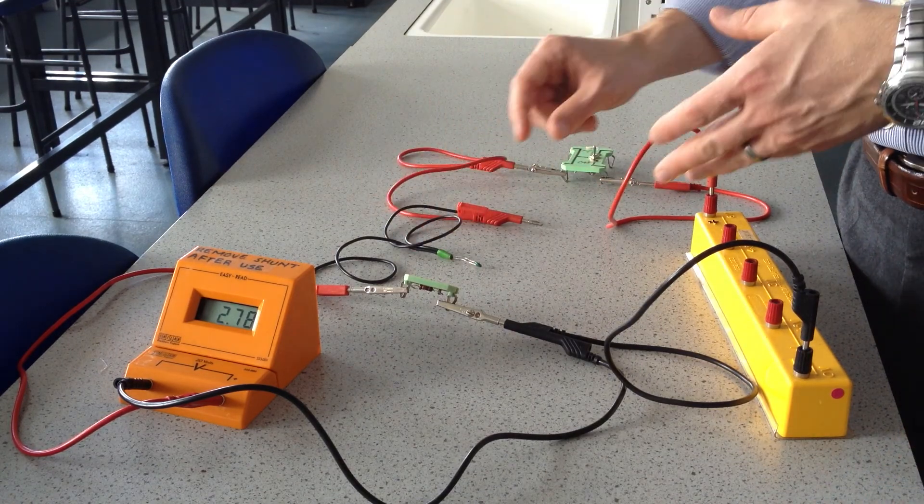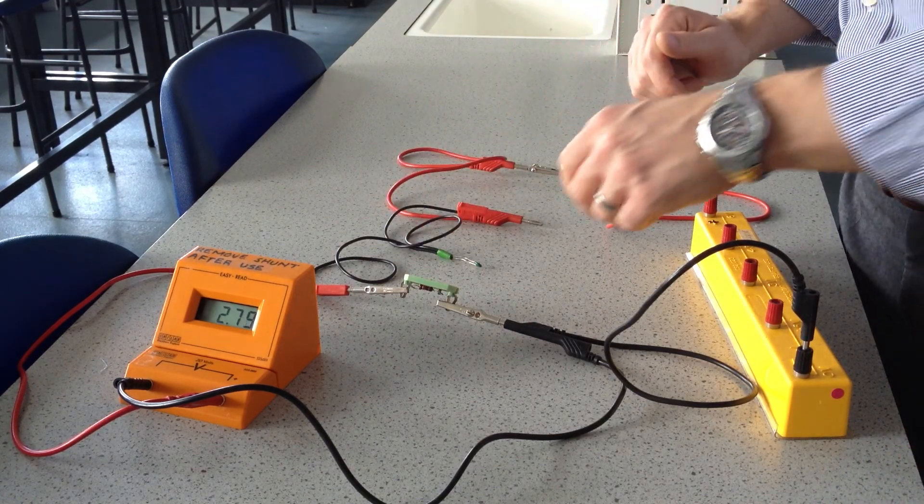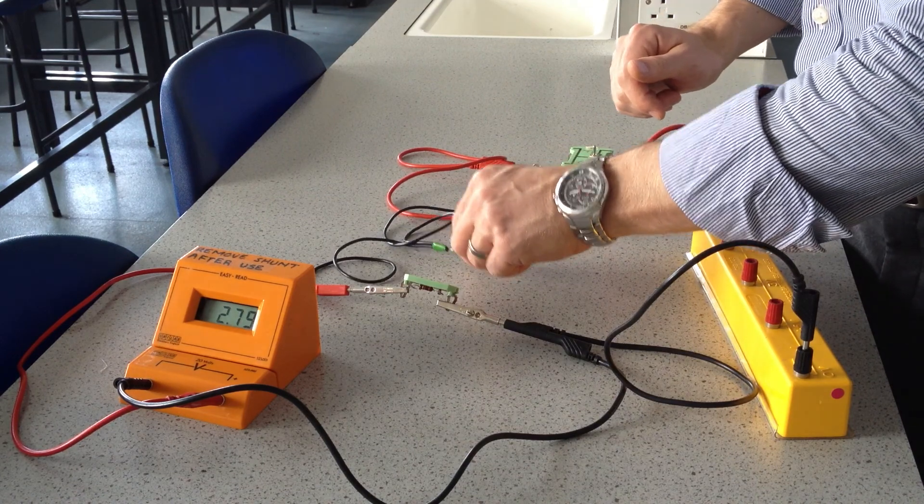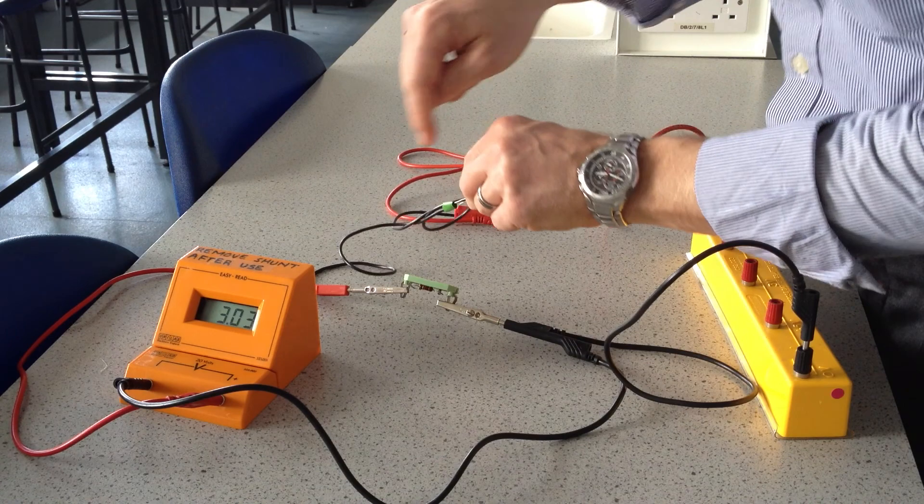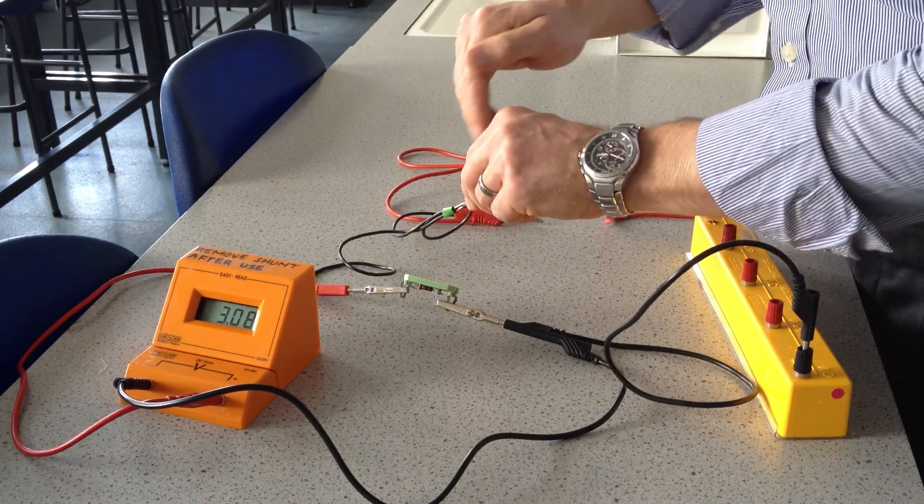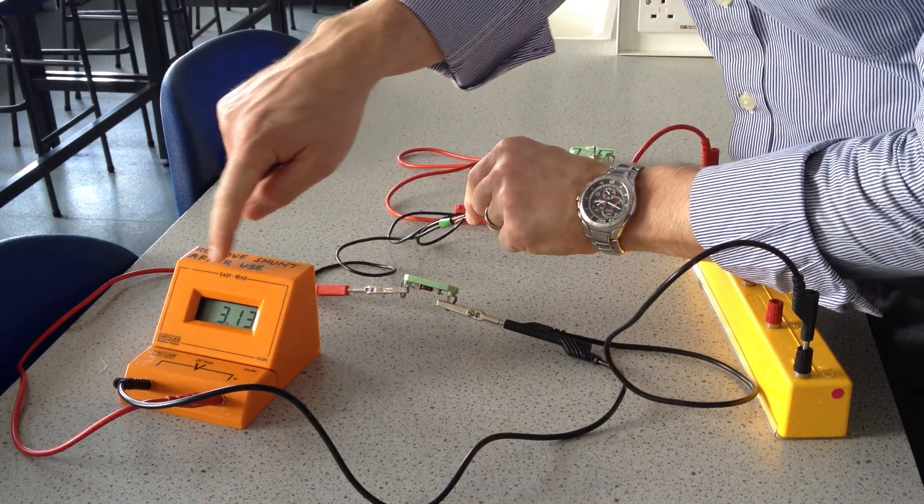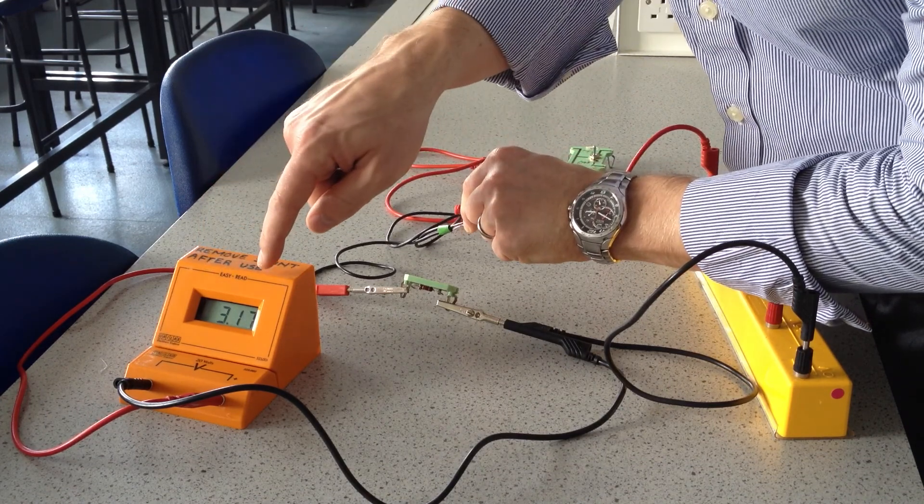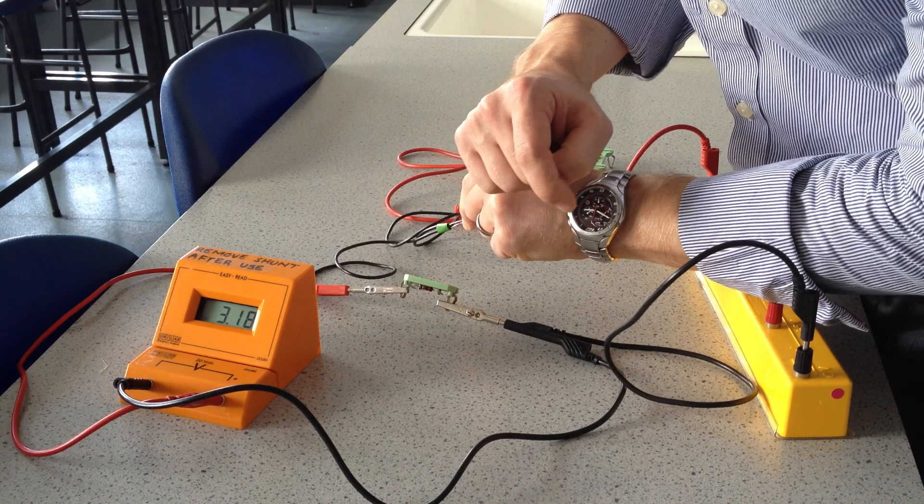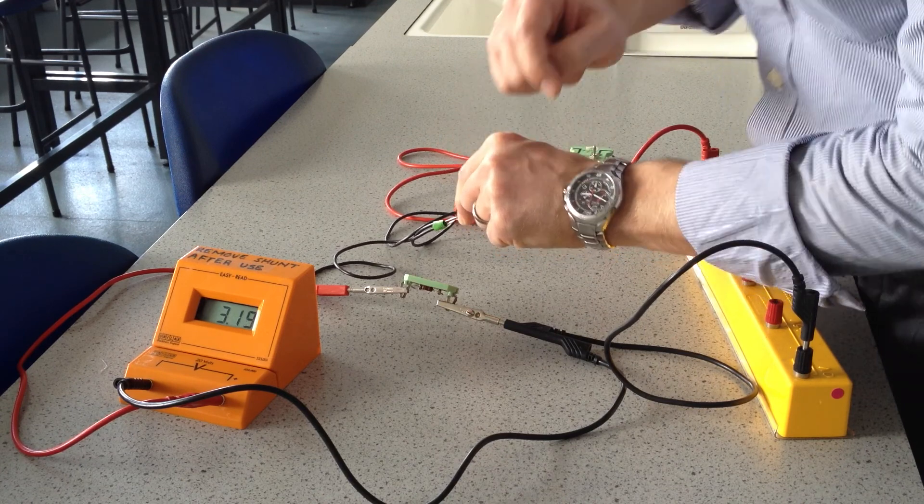What I will do now is increase the temperature of the thermistor. Because it is a negative temperature coefficient thermistor, as I am increasing the temperature its resistance is decreasing. We can see the voltage output is increasing here, so it is just under 3.2 volts at the moment.